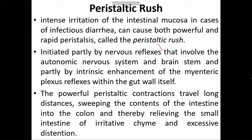Peristaltic rush occurs when there is any irritation of the intestinal mucous membrane, such as in infectious diarrhea. A powerful and rapid peristaltic wave of contraction occurs, which is known as peristaltic rush. It is initiated partly by nervous reflex involving the autonomic nervous system and brain, and is also affected by the myenteric plexus. This helps in sweeping the intestinal contents to the colon, thereby relieving the irritating chyme from the intestine.